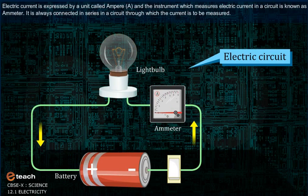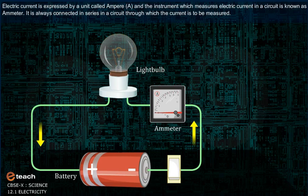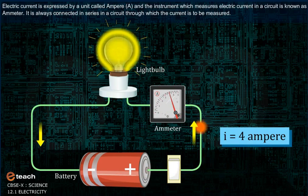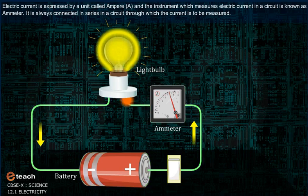The electric current is expressed by a unit called ampere, and an instrument which measures electric current in a circuit is known as ammeter. It is always connected in series in a circuit through which the current is to be measured.